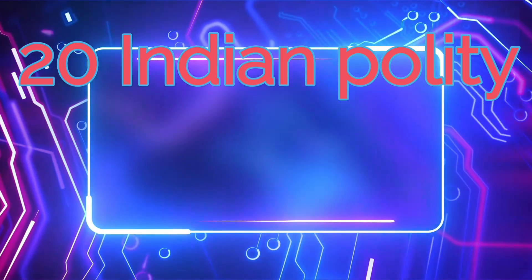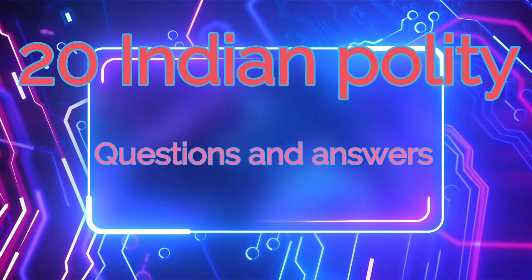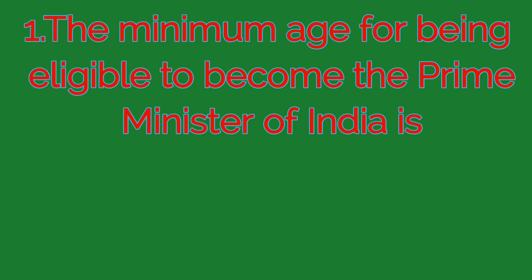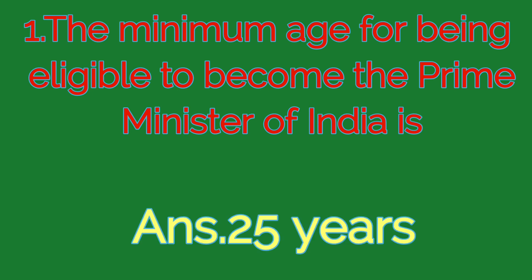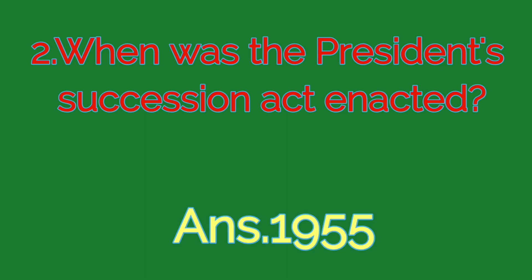Hi everyone, welcome to my YouTube channel. Today I will discuss 20 Indian polity question and answer. Question number one: the minimum age for being eligible to become the Prime Minister of India. The answer is 25 years. Question number two: when was the President's Succession Act enacted? The right answer is 1955.